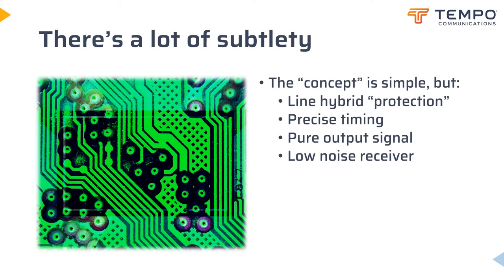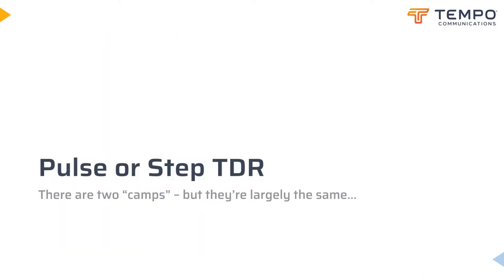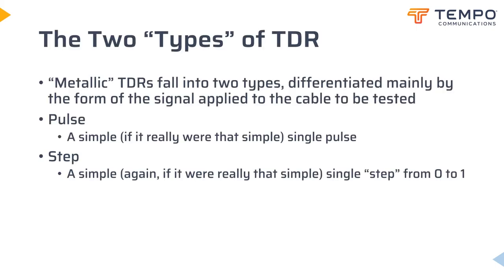An integrated TDR also becomes portable, even handheld. There are two fundamental types of TDR: those that apply a solitary pulse to the line, or those that apply a step function to the line. No TDR applies just one pulse or step — in the background, many are being sent and received, each with very slightly different timing to the last, and over a fraction of a second a detailed trace is built up from the returned information.